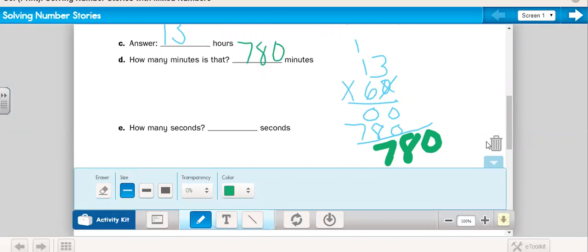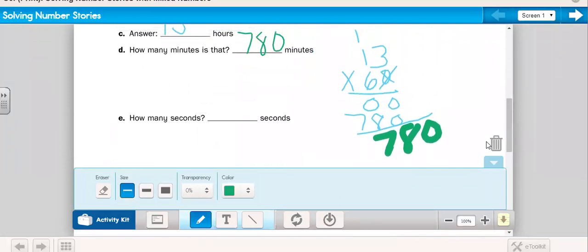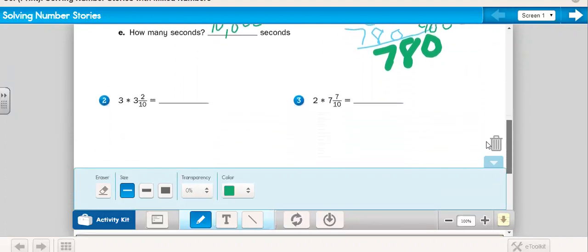How many seconds is seven hundred eighty? So, how many seconds are in a minute? Sixty. Seven hundred eighty times sixty. Zeros all the way across on the first line. Now, we're ready for our second line. Six times zero is zero. Eight times six is forty-eight. Seven times six is forty-two, plus four more is forty-six. Forty-six thousand eight hundred seconds. Now, we are ready for these other ones. I'm going to have you pause, answer numbers two and three, and see if you can get them.